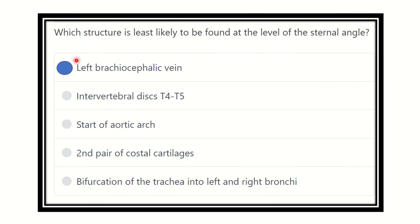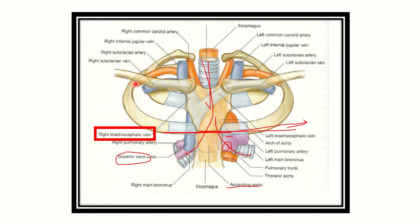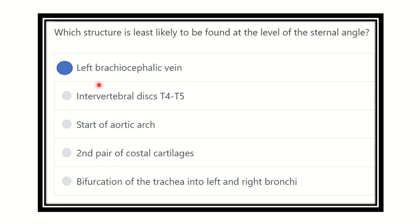Our answer is the left brachycephalic vein, because the brachycephalic vein does not enter the thorax at this level — it is above the second costal cartilage or external angle or angle of Louis. The other options are all present at this level: the intervertebral disc between thoracic 4 and 5, the start of the arch of aorta, the second costal cartilage, and the bifurcation of the trachea into right and left bronchi. Therefore, the left brachycephalic vein will not be present at the level of the external angle. Thank you.